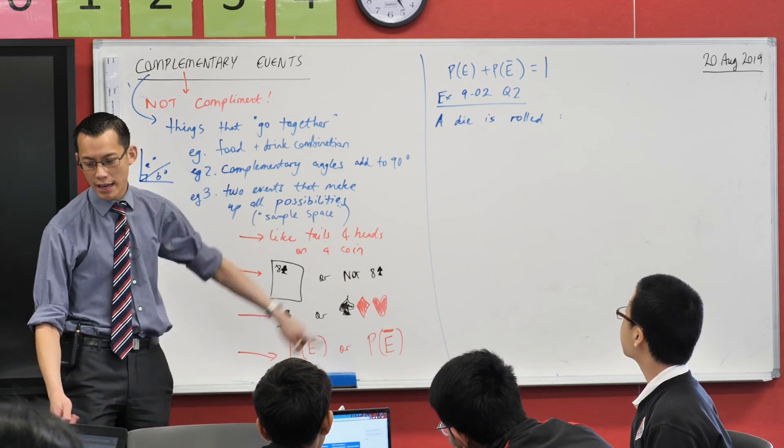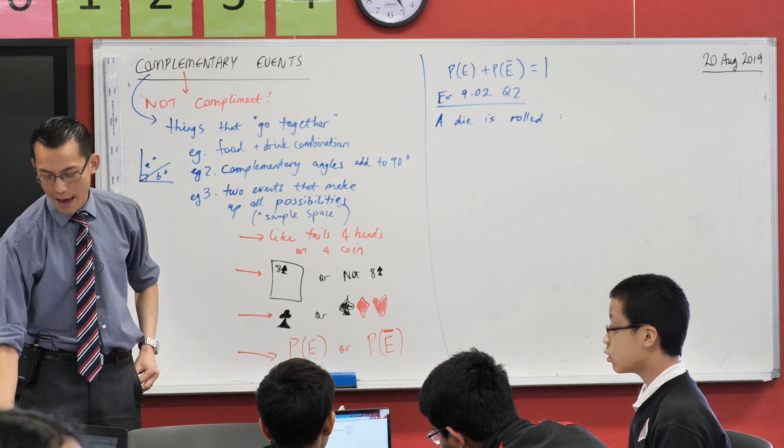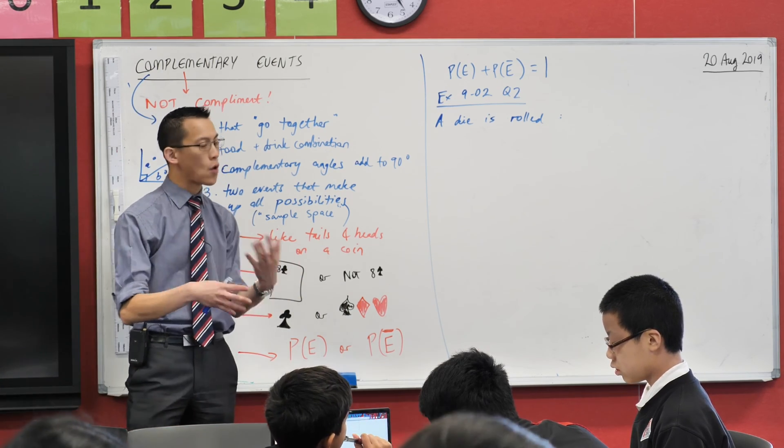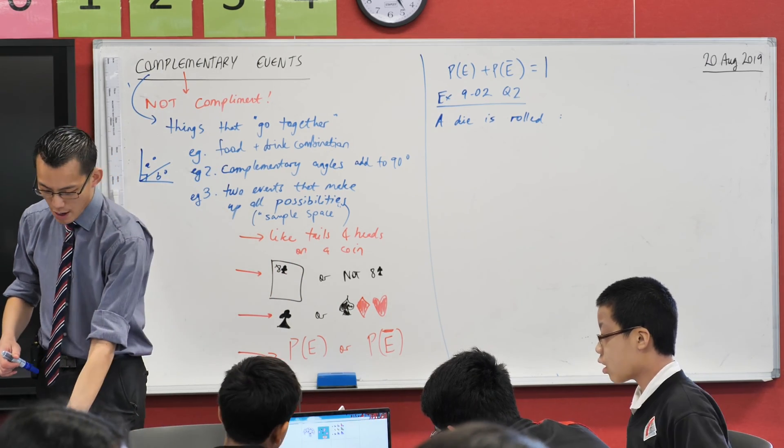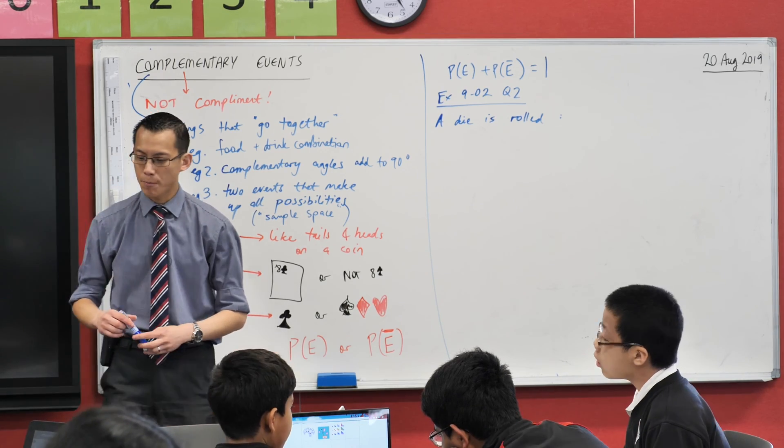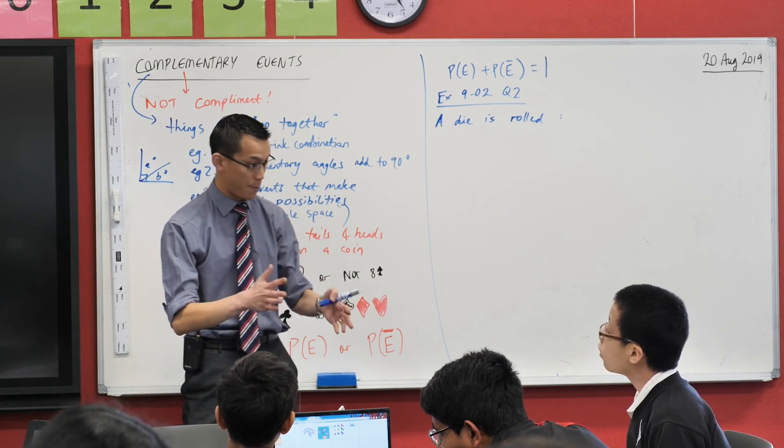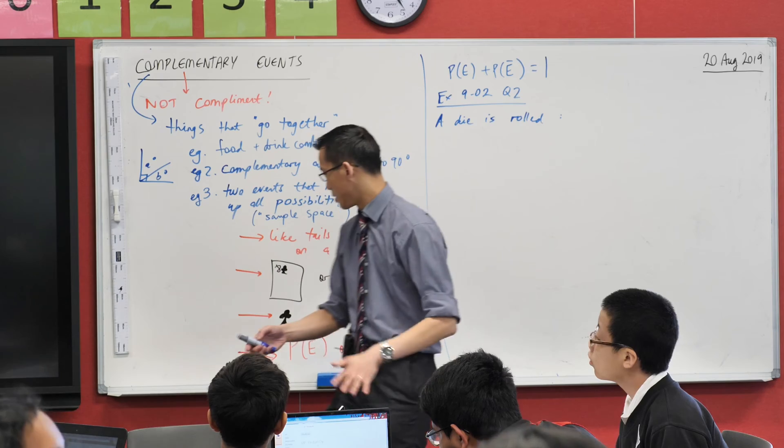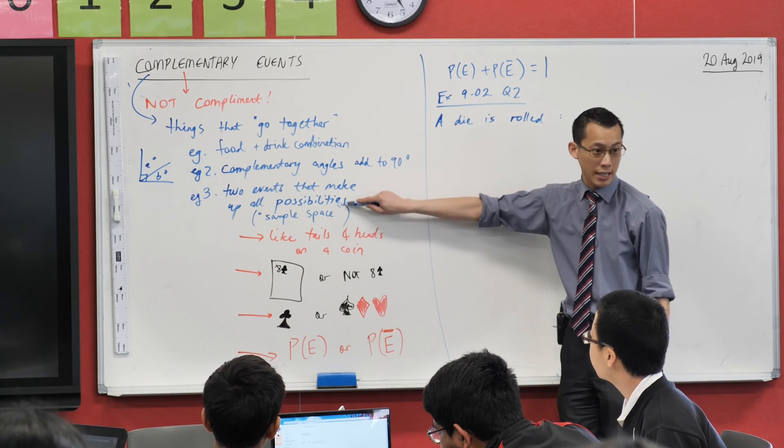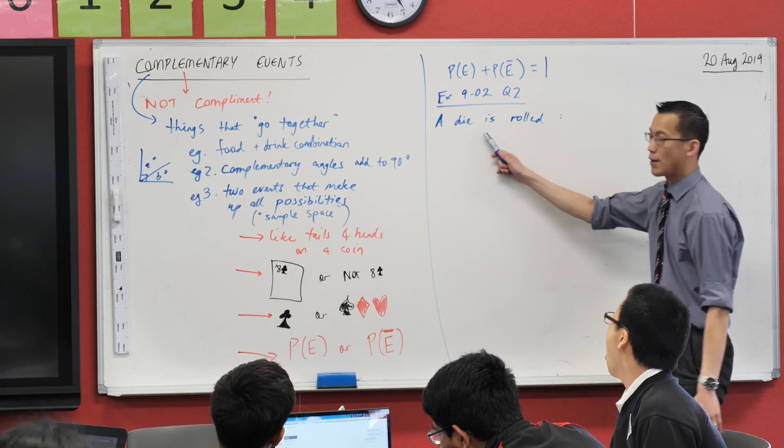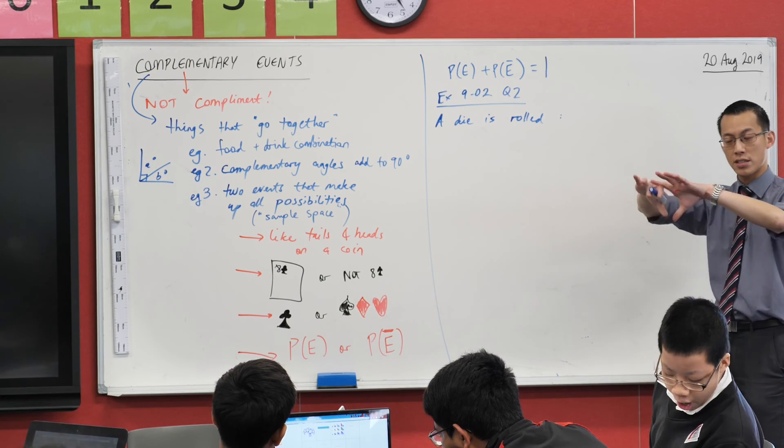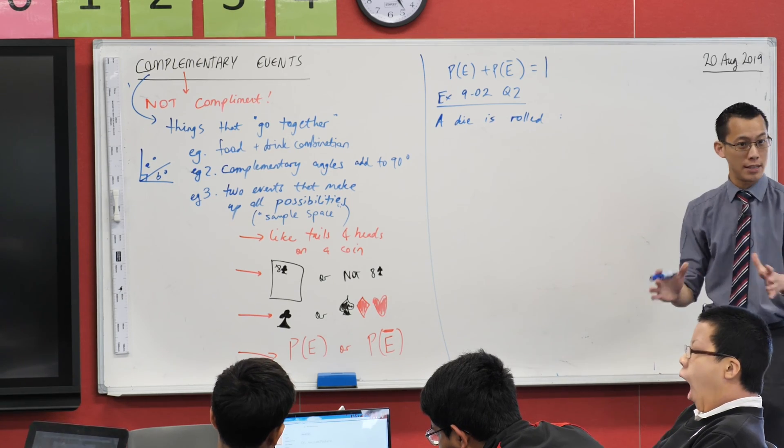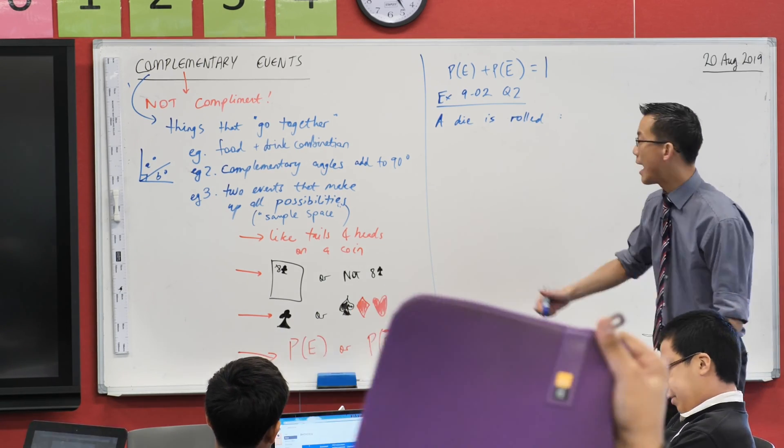So we're on question two right now. And I just want us to have a look at this situation and make sure that we understand it and we're writing it in the correct notation. A die is rolled. What's the probability that the result is? And then they give you a bunch of options. Okay. So for starters, I'm going to begin with this idea here, sample space, right? This is a relatively simple situation where there's not many different things that can happen. You can list them all out.